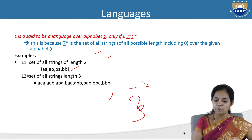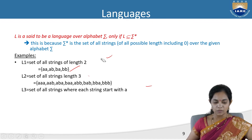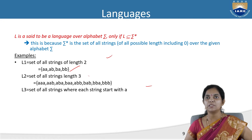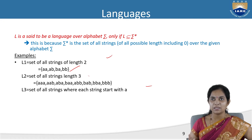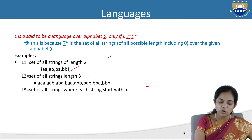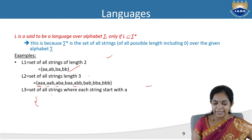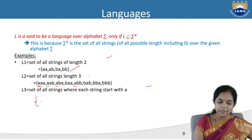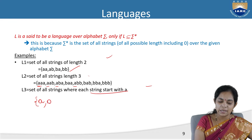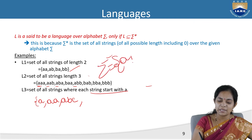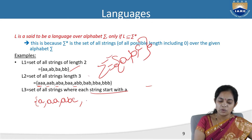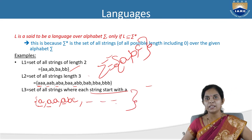One more example: L3 is the set of strings where each string starts with 'a'. Here the condition is that every string must start with a. There is no limitation on length — strings can be of any length as long as they start with a. The sigma for this language contains {a, b, c}.